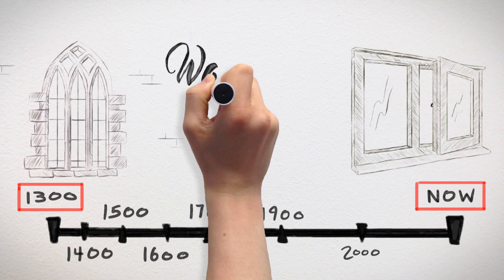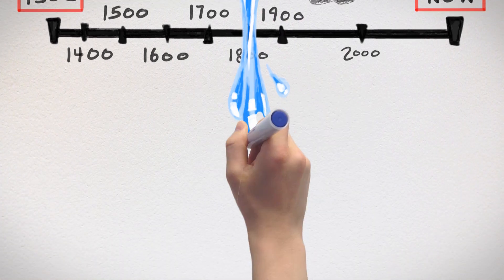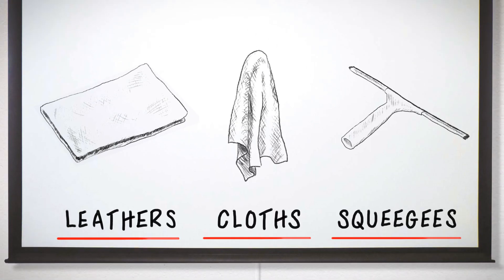For as long as there have been windows, water has been used to clean them. To avoid watermarks, it was always necessary to wipe windows dry using leathers, cloths or squeegees.